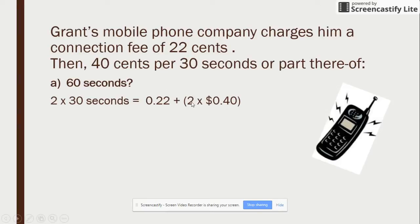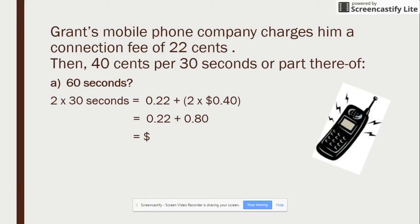When there's something in brackets, you do that first. You pull down your 0.22 and say 2 times 40 cents and you get 0.80. You add them together — I want you to do that so that you can see how much you get.